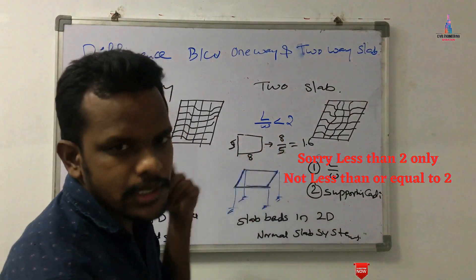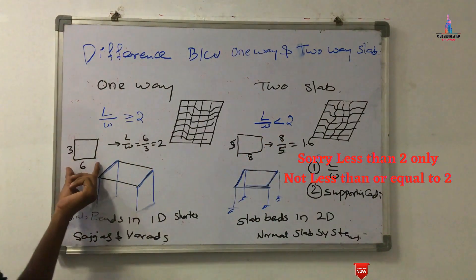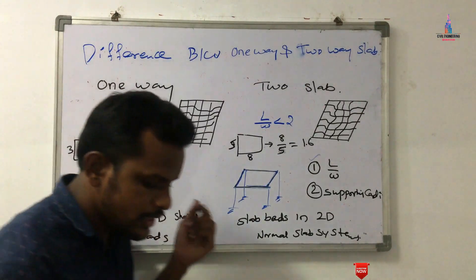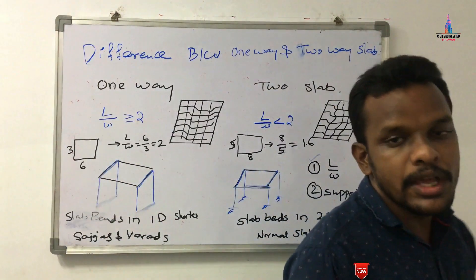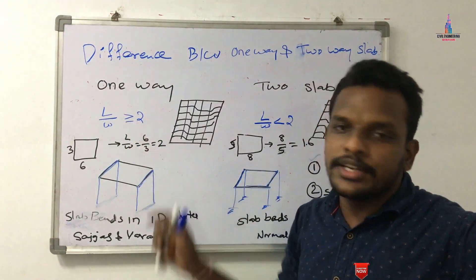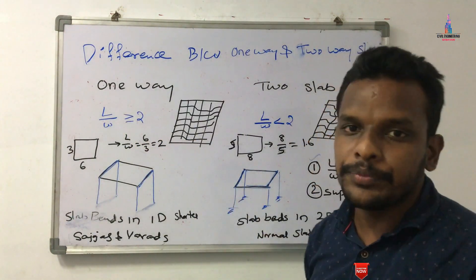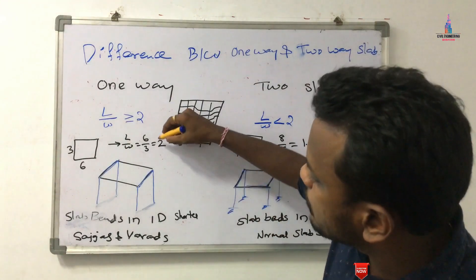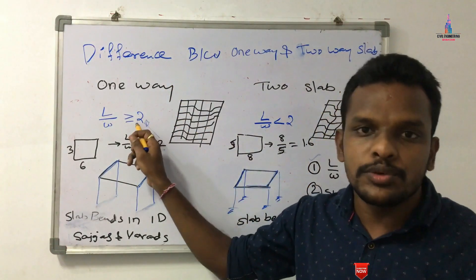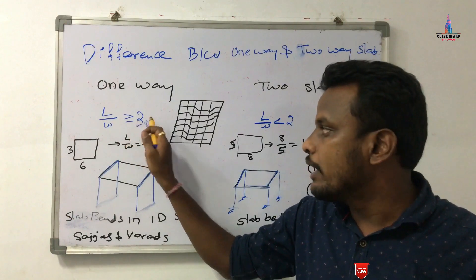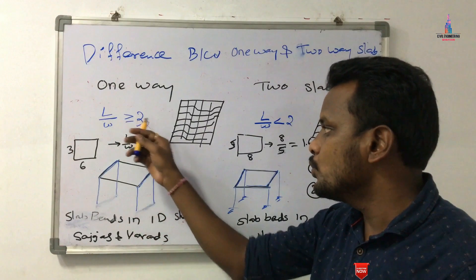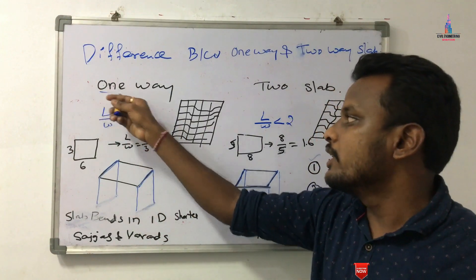For example, let us consider a slab with dimensions 6 meters length and 3 meters width. So L by W equals 6 by 3, which equals 2. This value of 2 is greater than or equal to 2, so this slab is classified as a one-way slab system.